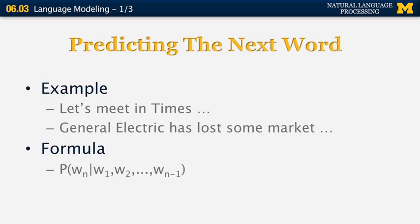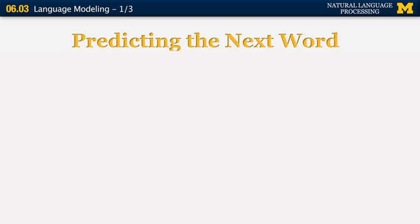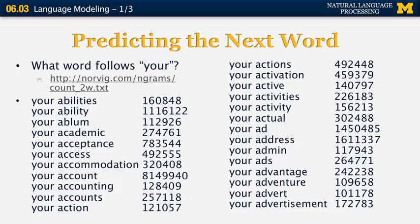What is the formula for predicting the next word? It's a conditional probability of word N given all the words before. So what word follows the word 'your'? According to the N-gram website from Peter Norvig, here is a list of words that follow 'your' in a huge corpus of Google documents. The word 'abilities' follows 'your' in 160,000 cases, the word 'ability' follows 'your' with a count of 1.1 million, and so on. All those numbers are pretty large and can be very different from one another.